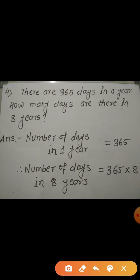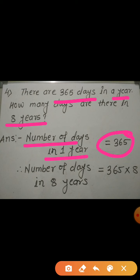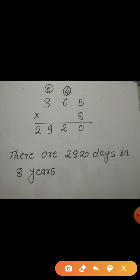Now let's move to question number 4. It's a very simple question: there are 365 days in a year. How many days are there in 8 years? What is given is the number of days in one year — 365 days. We need to find the total number of days in 8 years, so we multiply 365 by 8.